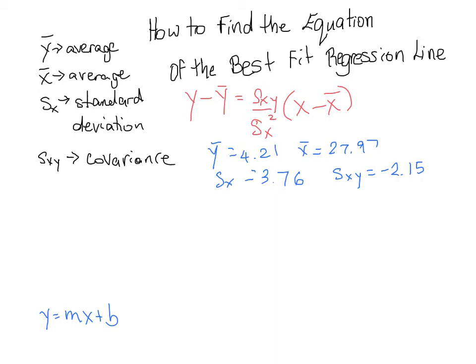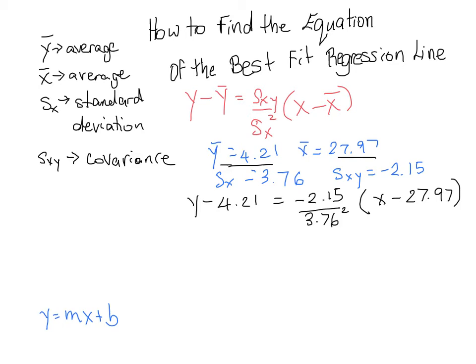Looking at the formula, we start plugging in. We have y minus the average of y, so y minus 4.21, equals sxy which is negative 2.15, over sx squared which is 3.76 squared, times x minus the average of x, which is 27.97. That first step is just plugging in these four values.